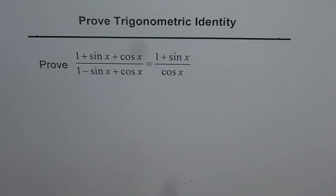Proof of a trigonometric identity. The question is to prove (1 + sin x + cos x) divided by (1 - sin x + cos x) is equal to (1 + sin x) divided by cos x.